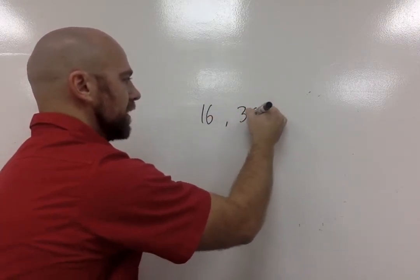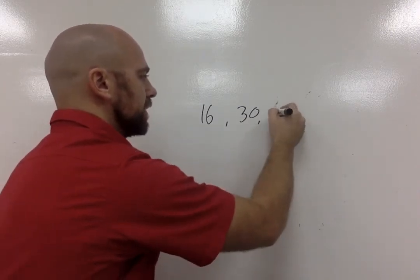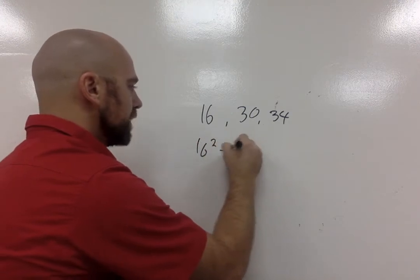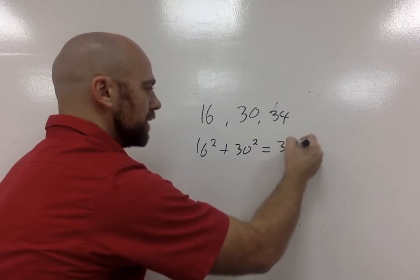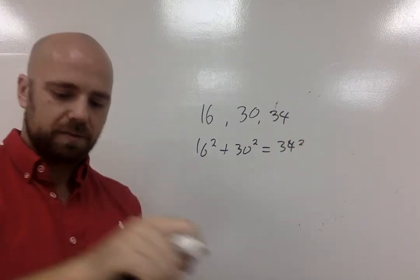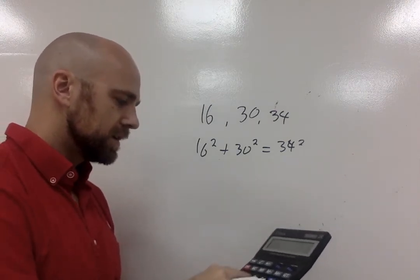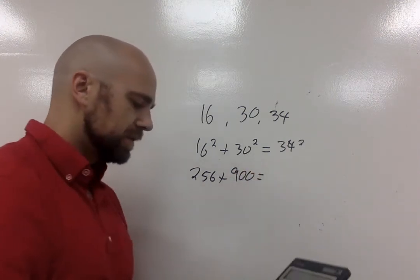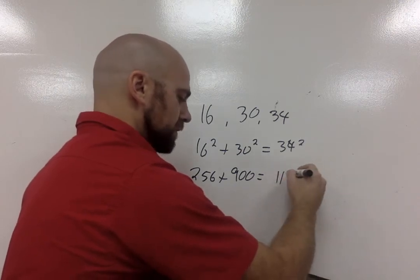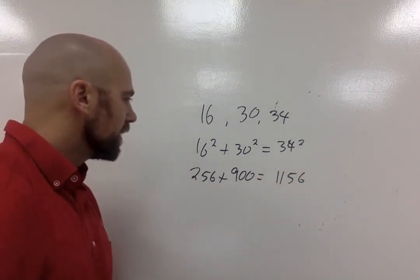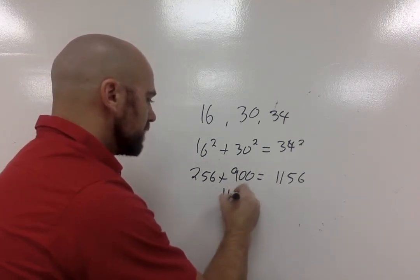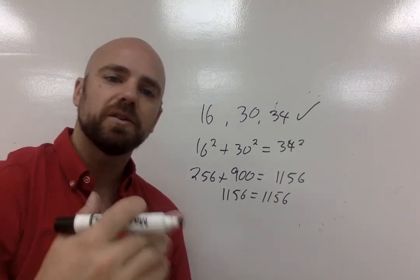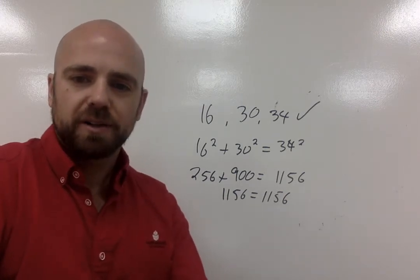So say if we had 16, 30, and 34. So what we can do is we can actually put all of these numbers in. So we can say 16 squared plus 30 squared should equal 34 squared. So I'm going to take my calculator. I'm going to go 16 times 16 gives me 256 plus 30 times 30 is 900 equals 34 times 34. See if it equals 1,156. So when I add these together, 256 plus 956, I get 1,156 equals 1,156. So that means this one would be a right triangle. So then you're going to do more examples similar to that to try to figure out which are right triangles and which are not.